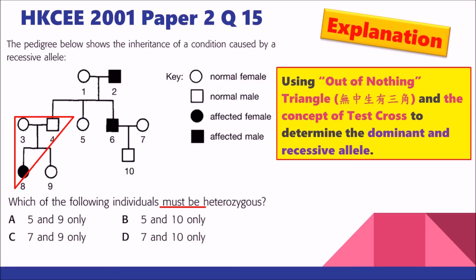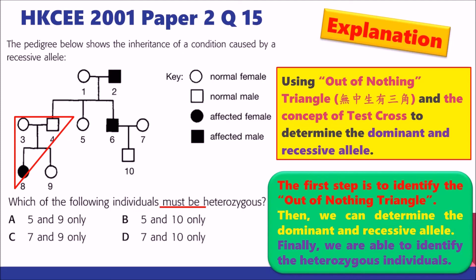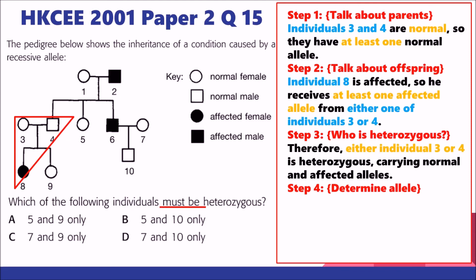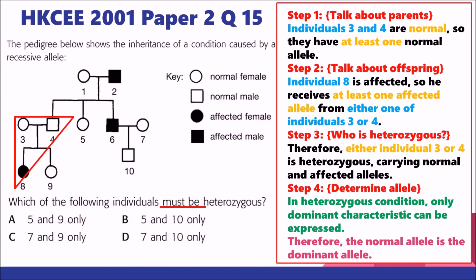Now we go back to the challenge question from last video. After reading the pedigree, we need to deduce which individuals must be heterozygous. We use the out of nothing triangle first, then determine the dominant and recessive allele. We pick individuals 3, 4, and 8 in a triangle, then start the guiding questions to construct logical thinking — talking about parents, offspring, and identifying the heterozygous individual. Finally, the concluding statement helps us determine that the normal allele is the dominant allele.